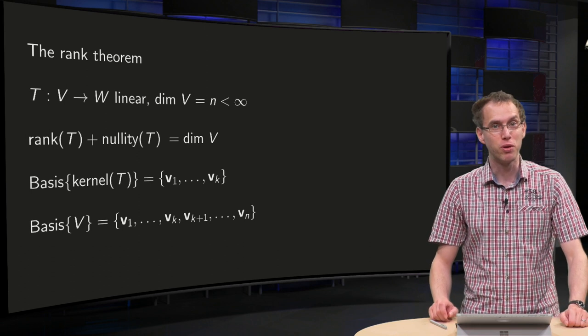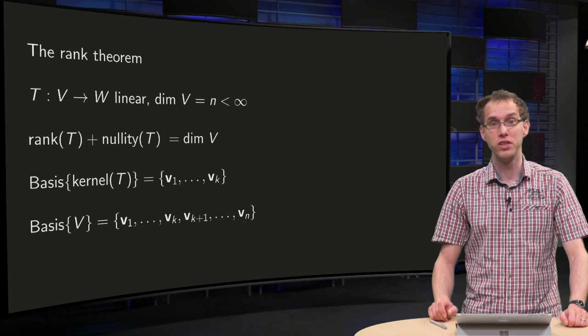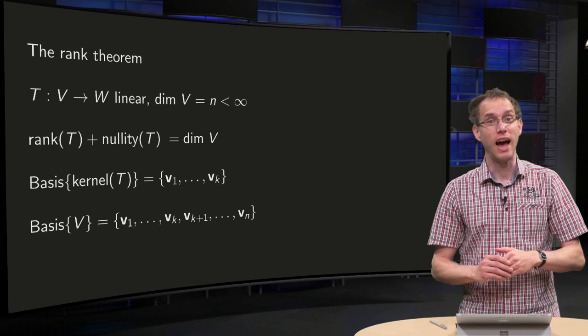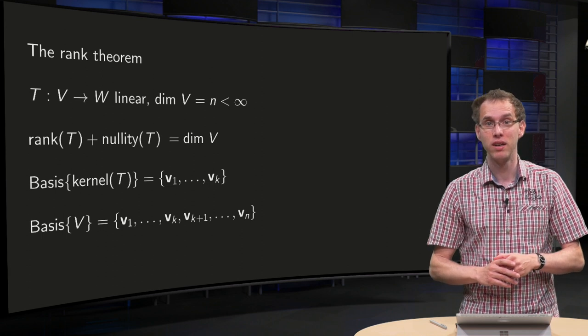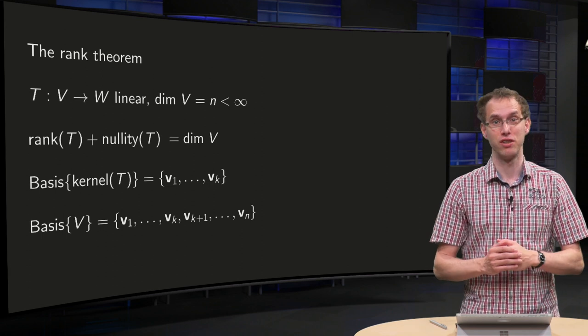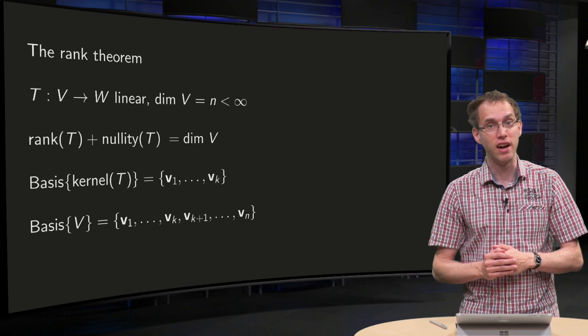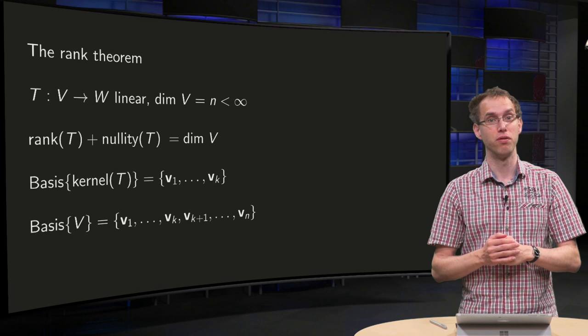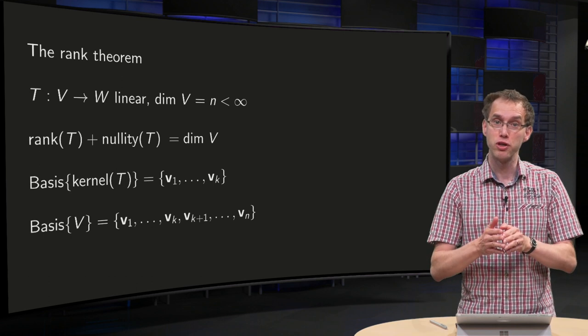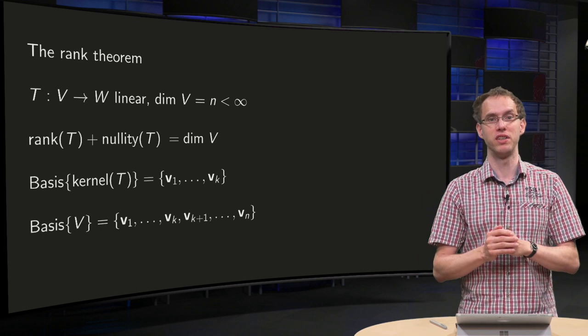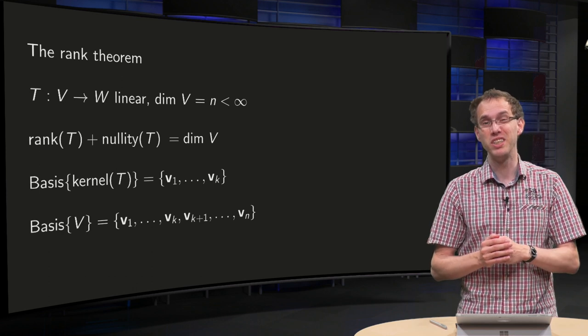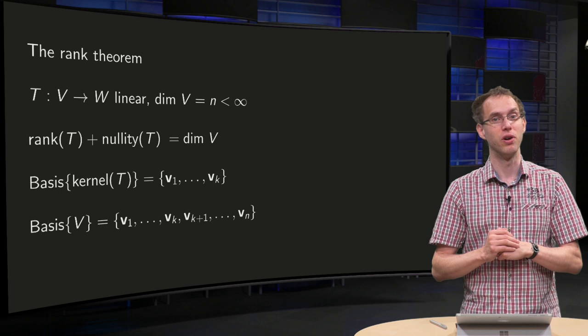In all the examples where we computed the rank and nullity of a linear transformation, we saw that the rank and nullity add up to the dimension of the domain. For a matrix transformation it is intuitively clear. The rank equals the number of pivots, the nullity the number of free variables, so the sum equals the number of columns of the matrix, so the dimension of the domain. But why is this true in general? That is what you will learn in this video.